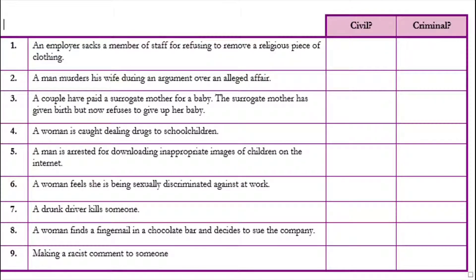Look at the table and decide which statements are civil disputes and which are criminal acts. Number one: an employer sacks a member of staff for refusing to remove a religious piece of clothing. Number two: a man murders his wife during an argument over an alleged affair. Number three: a couple have paid a surrogate mother for a baby — the surrogate has given birth but refuses to give up her baby. Number four: a woman is caught dealing drugs to school children. Number five: a man is arrested for downloading inappropriate images of children on the internet. Number six: a woman feels she is being sexually discriminated against at work. Number seven: a drunk driver kills someone. Number eight: a woman finds a fingernail in a chocolate bar and decides to sue the company. Number nine: making a racist comment to someone. Try doing this activity yourself before we go through the answers.